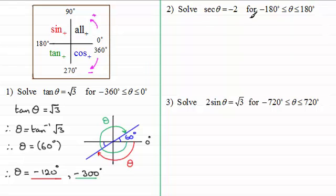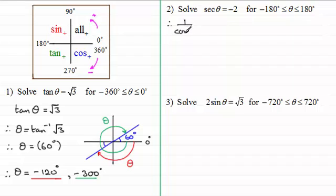For the second question: solve sec θ = −2, for θ between minus 180 and 180 degrees inclusive. This is a very common range. I picked sec θ because it means we have to change it into 1 over cos θ. So 1 over cos θ equals minus 2. Rearranging — multiply both sides by cos θ to get 1 = −2 cos θ, then divide by minus 2 — we get cos θ = −½.